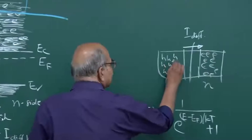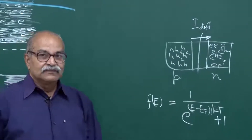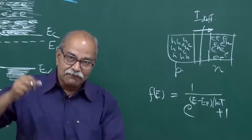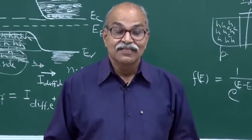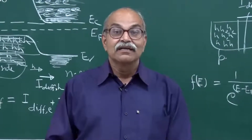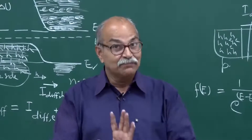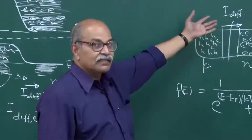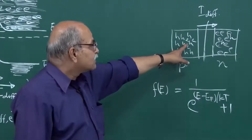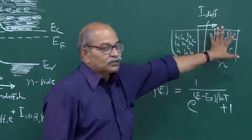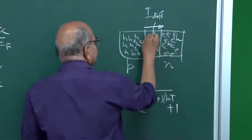How do those minority carriers come? The majority carriers come because we have doped the system with impurities. Minority carriers come because of thermal energies - electron-hole pairs are continuously created and continuously destroyed; recombination also takes place. So you have recombinations and thermal generation happening in any part of the semiconductor material. These minority carriers essentially come from that process, which takes place throughout - including in the depletion region, where EH pairs are created and destroyed.